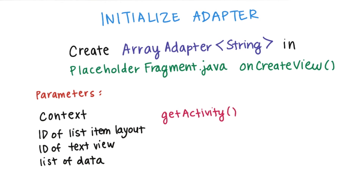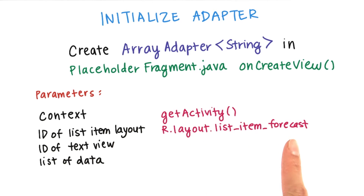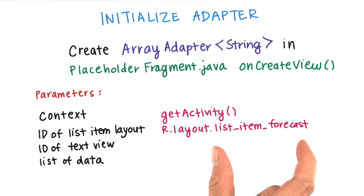Since the adapter needs to know the layout for each list item, it needs some reference to the XML layouts that we've defined. The R.java class is a generated file that creates human-readable identifiers for our resources. For the list item layout, we refer to it in code as R.layout.listItemForecast — this was the name of the XML file that we created earlier.